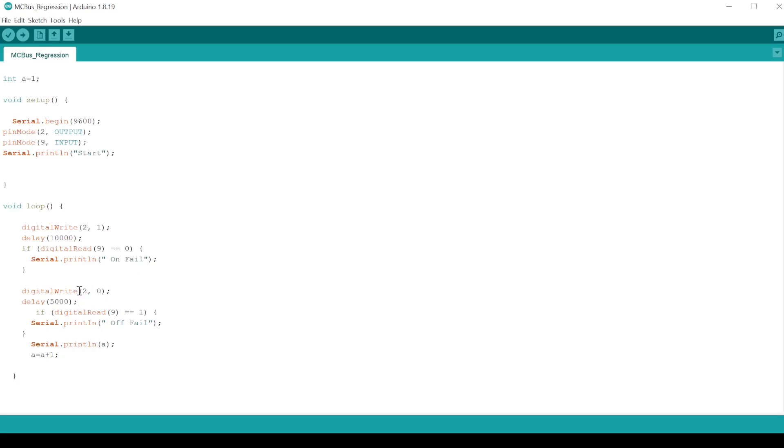Similarly, when we turn off, setting pin two to a logic zero is turning us off. Then we'll wait for five seconds. By that time, the amplifier should be off, so we should be reading a logic zero. If we're reading a one, then we've got a failure to turn off.